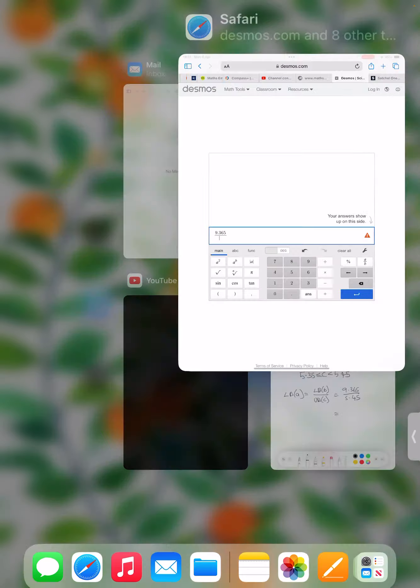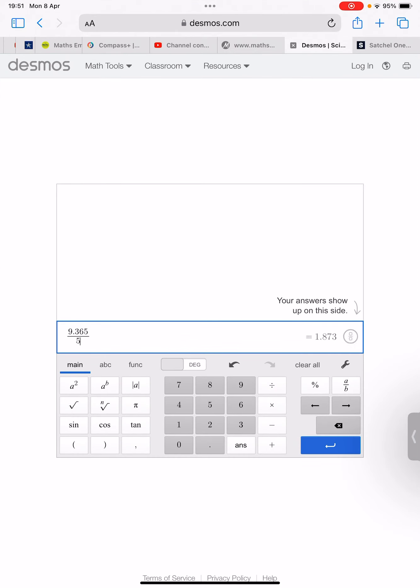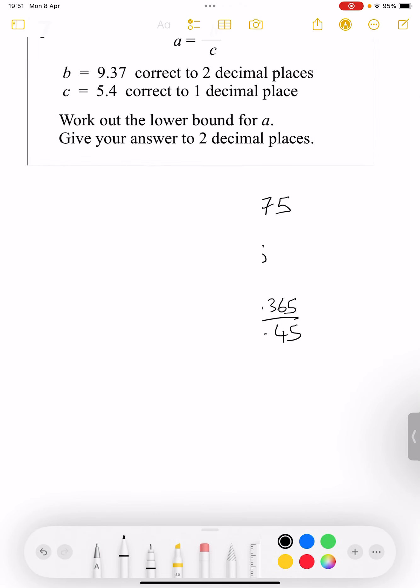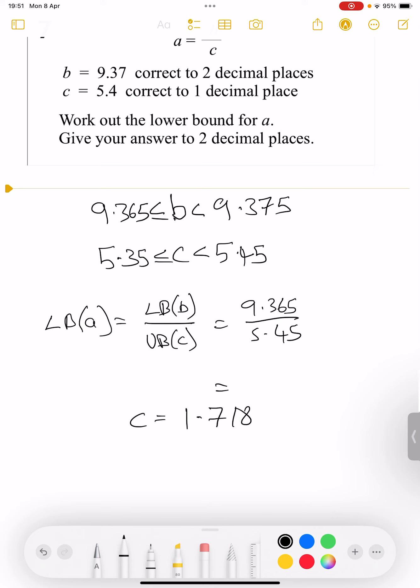The answer is 1.718... So a equals 1.718, which is in fact 1.72 to two decimal places.